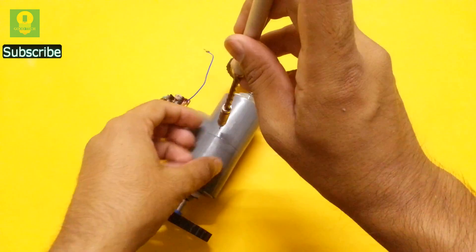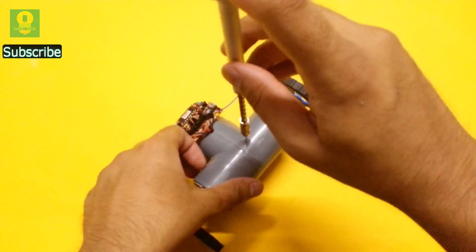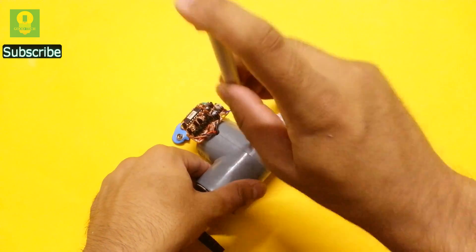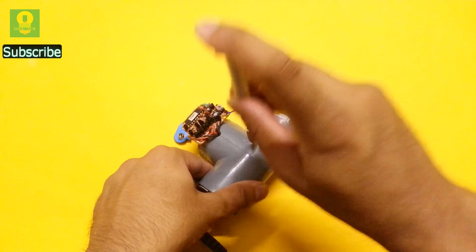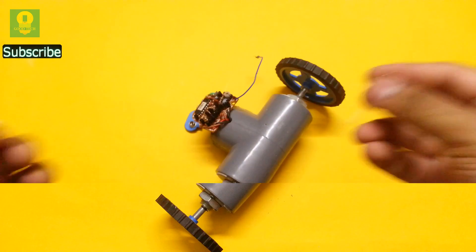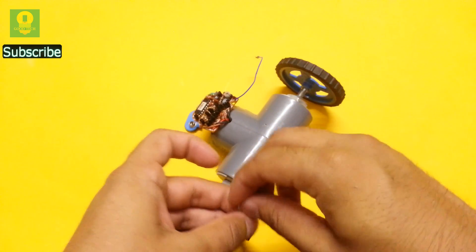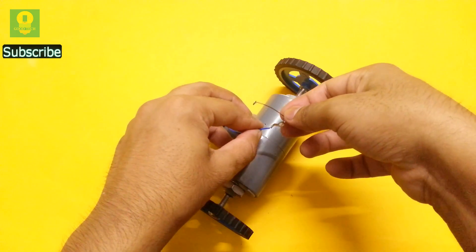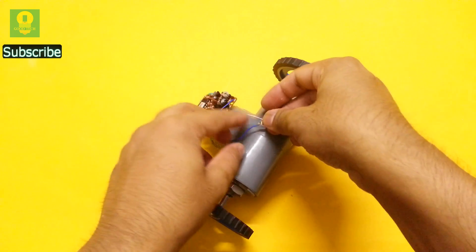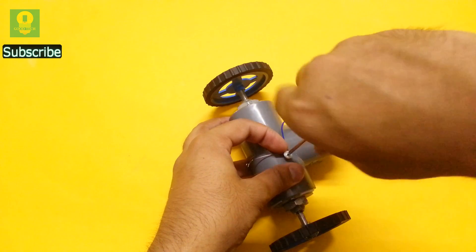Using a PCB drill, make a hole on the PVC tee. Take a small screw and a metal wire. Connect the antenna wire to the metal wire and screw them both on the PVC tee.